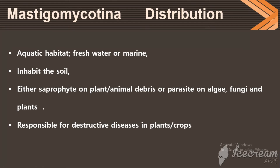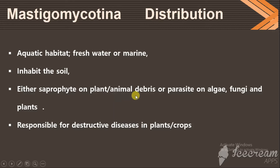Here we share the distribution and habitat of the members of Mastigomycotina. Mostly, Mastigomycotina members are found in aquatic habitats, either freshwater or marine. They are also found in soil as saprophytes, living on plant, animal debris, or dead material. They also live as parasites on algae, fungi, and other plant species, and are responsible for destructive diseases in plants and crops.